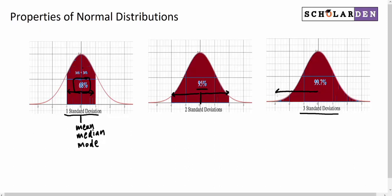And again, normal distributions are symmetrical. Finally, there's something called the standard normal distribution.